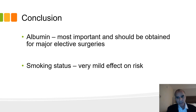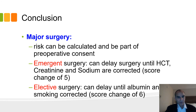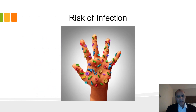With major surgery, risk can be calculated and be part of the preoperative consent. In emergent surgery, it can potentially be delayed until the hematocrit, creatinine, and sodium are corrected — that might take a day or two — and that can change your score by 5 points, significantly impacting the risk of perioperative complication. In elective surgery, you can wait even longer: correct the albumin and certainly stop smoking if you have any luck with that. Thank you very much — I think it was a very useful article.